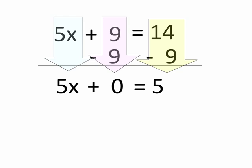So here, I use the inverse property of addition. If you add a number that is positive 9 and its opposite, negative 9, the answer is 0. And I know that 5x plus 0 is just 5x. That's the identity property of addition. So I have 5x equals 5.